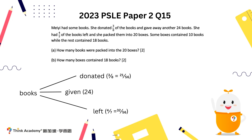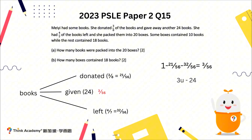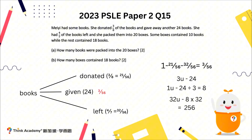Taking one whole and subtracting 21 over 56 and 32 over 56, we get 3 over 56, which represents the given section. That means 3 units refers to 24 books, so 1 unit equals 8. Since we need the number of books packed into the 20 boxes, we count 32 units, which gives us 256 books.